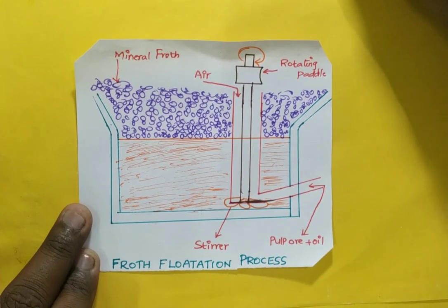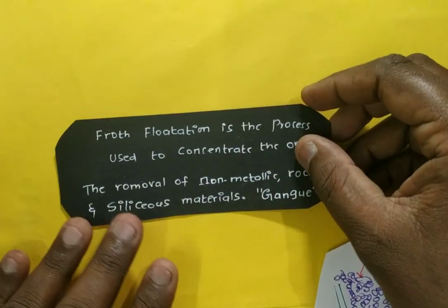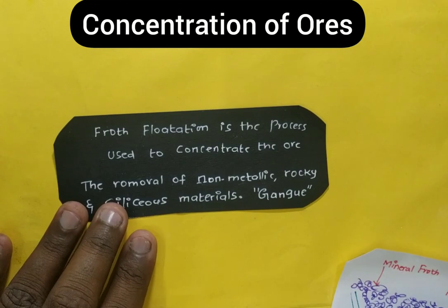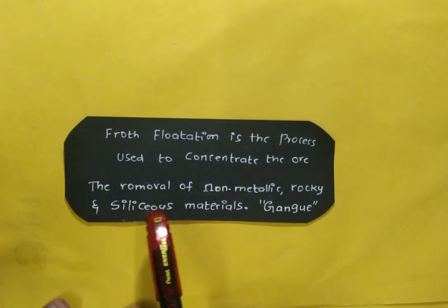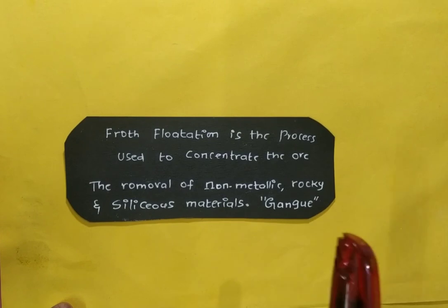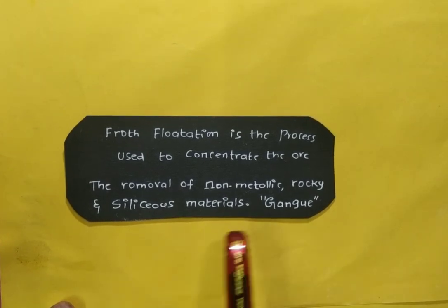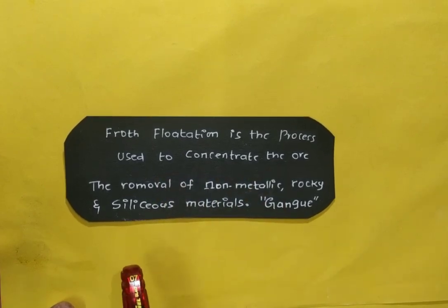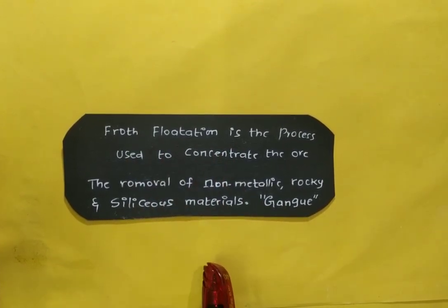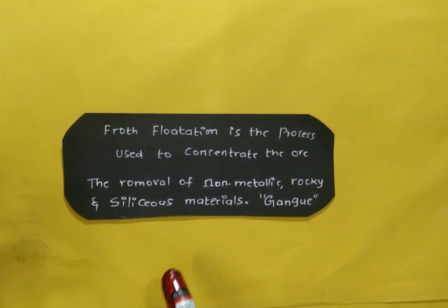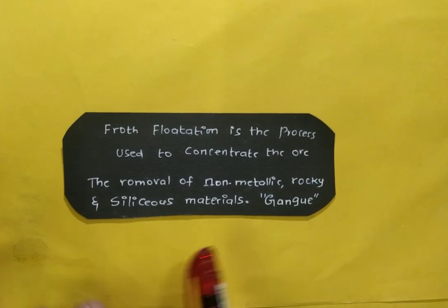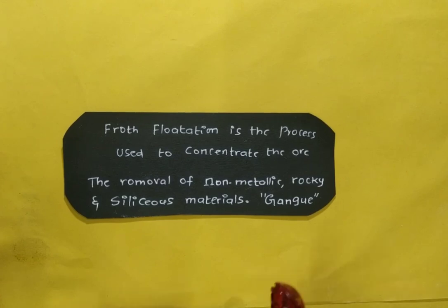The first step of extraction of metal is concentration. Concentration is the removal of non-metallic, rocky, and siliceous materials, which are collectively called gangue. Gangue particles can be removed by concentration of ores, which can be done by several methods: gravity separation, magnetic separation, leaching, and froth flotation. Froth flotation is one of these concentration processes.